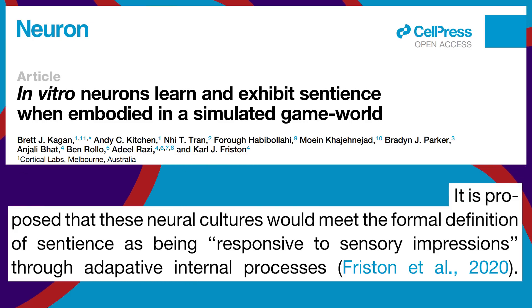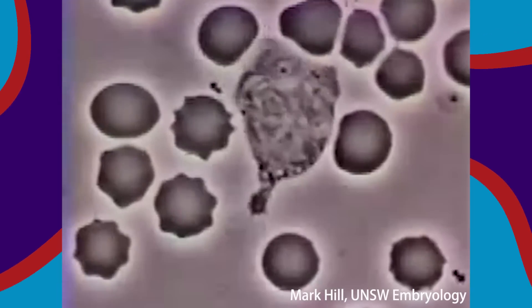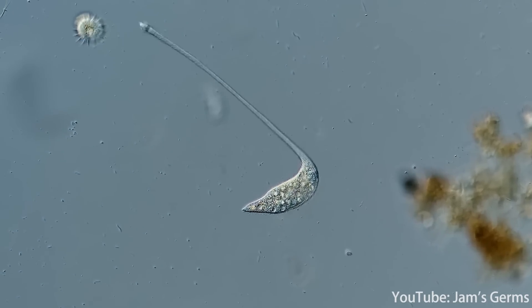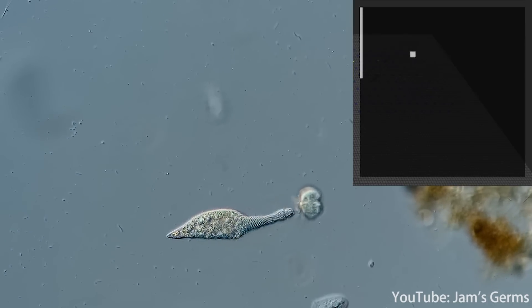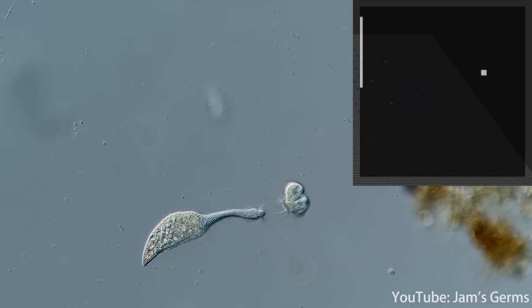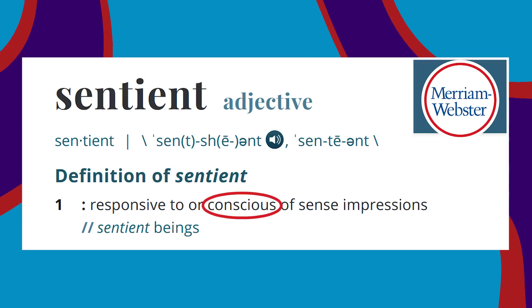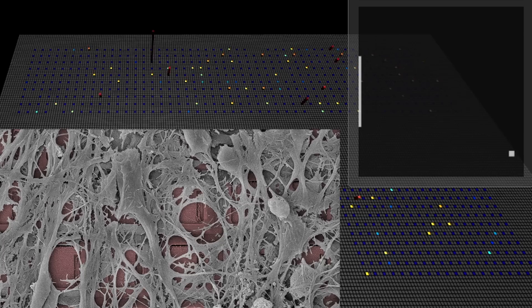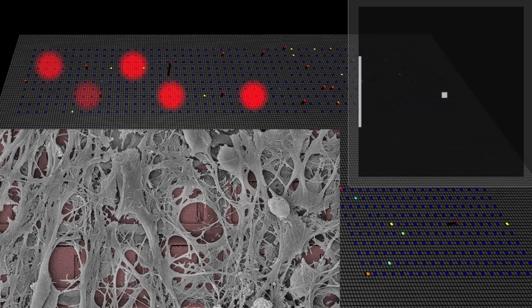Maybe, by one definition. But even single cells show evidence of learning and responding to their environment. A lot of people are more concerned about the other meaning of sentience related to consciousness. Does it feel like something, to be a little brain in a dish playing pong? Does it care about stuff? Is it confused when it gets the random stimulation? Is it having an experience at all?